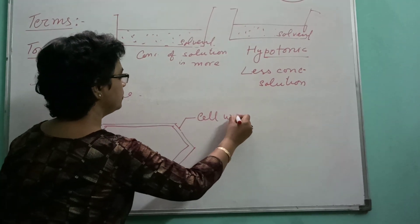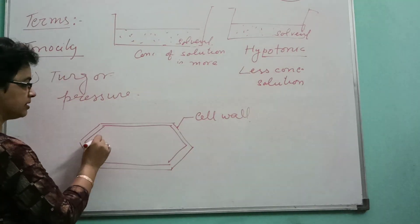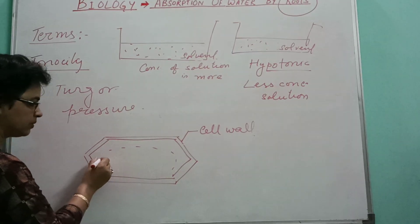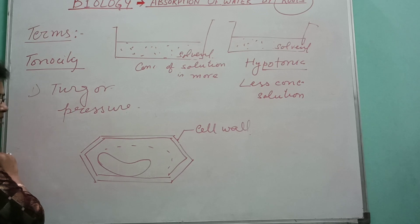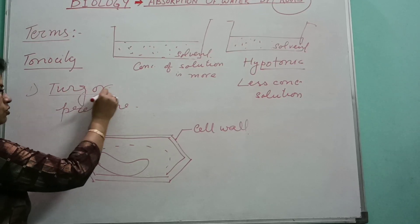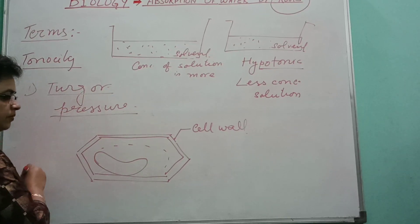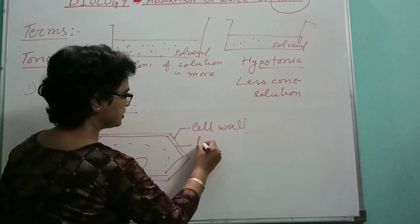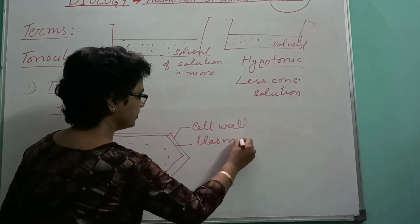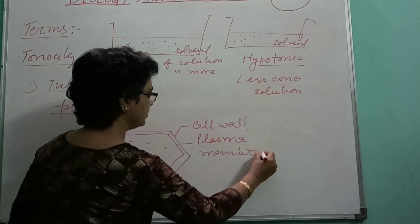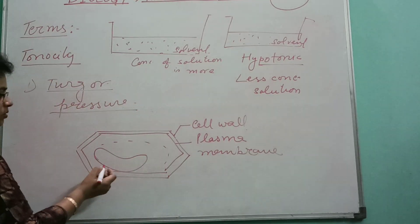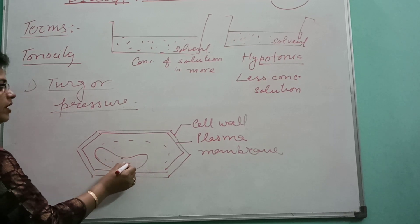This is cell wall. Inside this, there is cytoplasm. As it is a plant cell, a large cell vacuole is also there. This vacuole is filled with the vacuole sap. Nucleus is present.